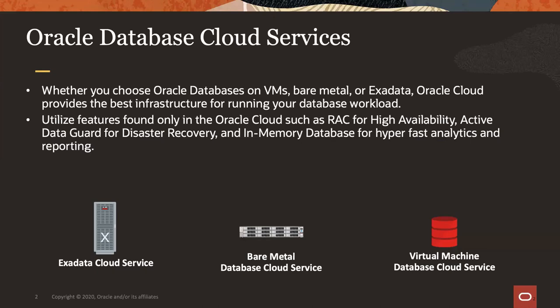We have three main Oracle Cloud database services. We have our Exadata Cloud Service, which is the flagship Oracle Exadata database product — we just launched the X8M Exadata Cloud Service, available in mostly all data centers, giving you persistent memory and great features. We have our bare metal database cloud service, our virtual machine database cloud service allowing you to create a database on a virtual machine, scale it up, add storage. All of these services are elastic.